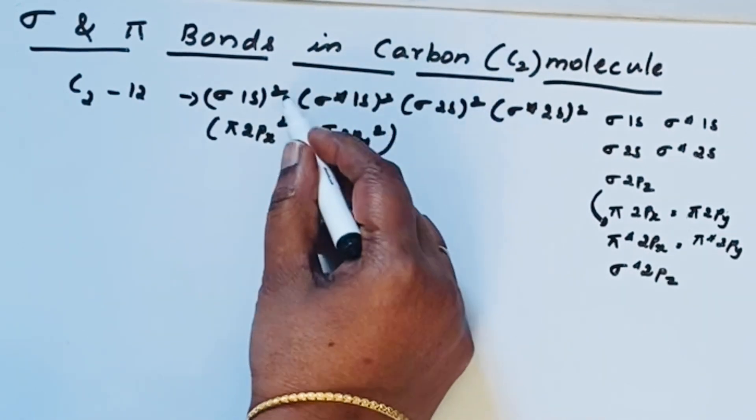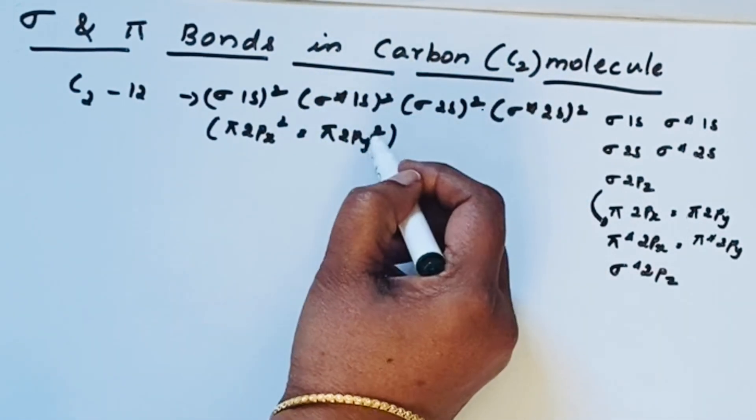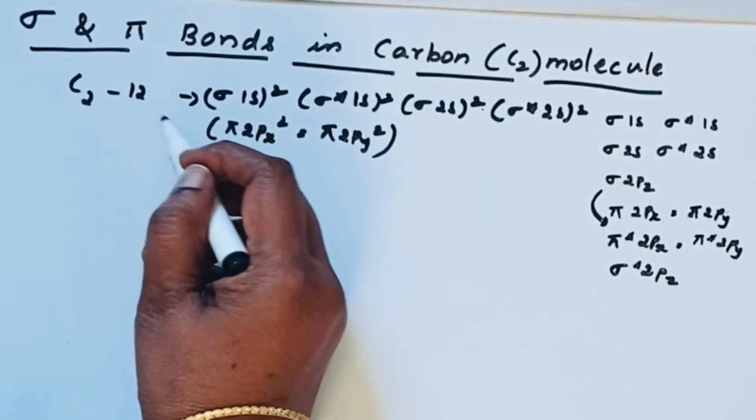Now count the electrons: 2, 4, 6, 8, 10, 12. So 12 electrons are present in C2.